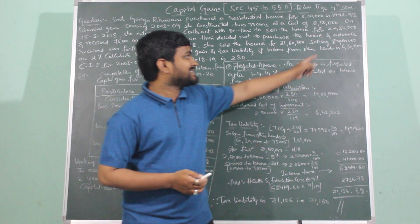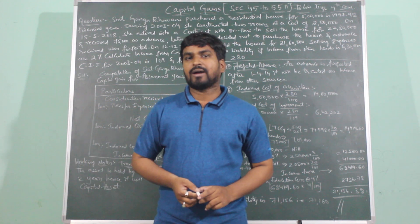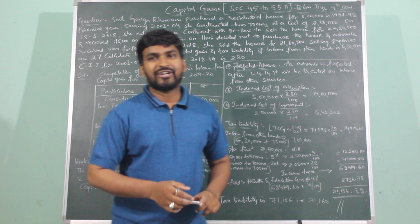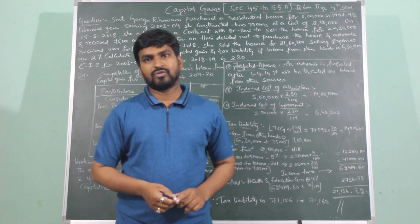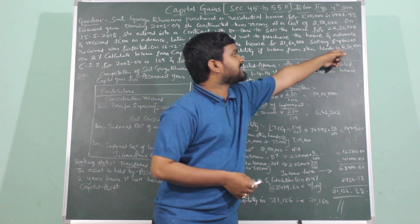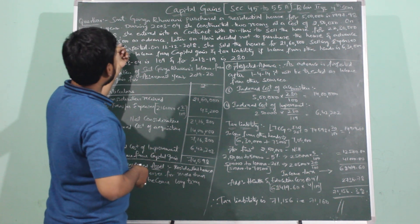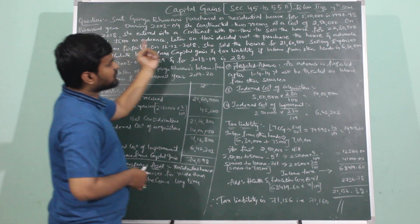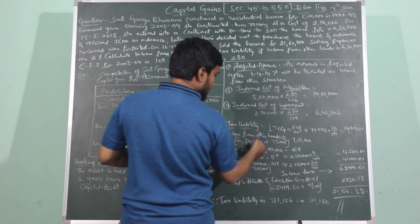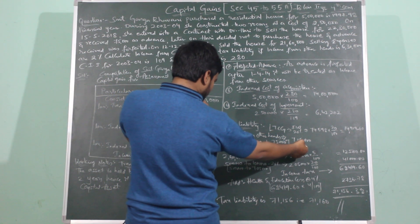Long-term capital gain is taxed at a flat rate of 20%, and short-term capital gain is taxed at slab rate. As the advance is being forfeited after 1st April 2014, it should be added with income from other sources. The advance of Rs. 75,000 forfeited after 1st April 2014 is considered income from other sources. Income from other heads as per question is Rs. 6,30,000, plus Rs. 75,000 advance forfeited, giving total income from other sources of Rs. 7,05,000.